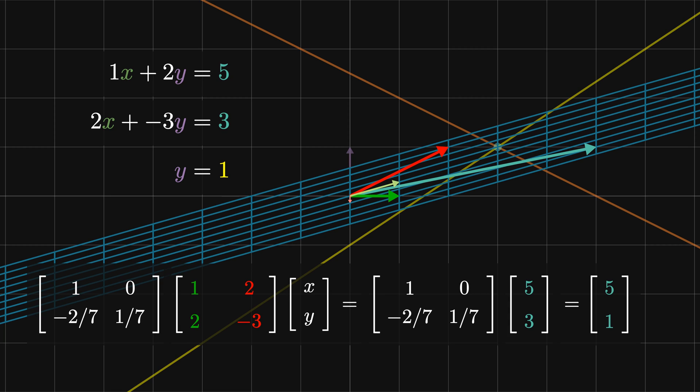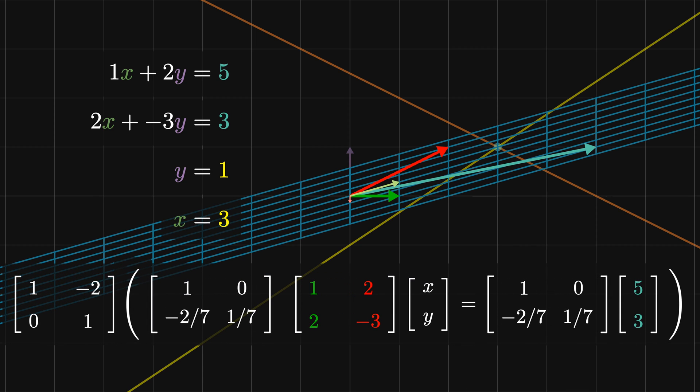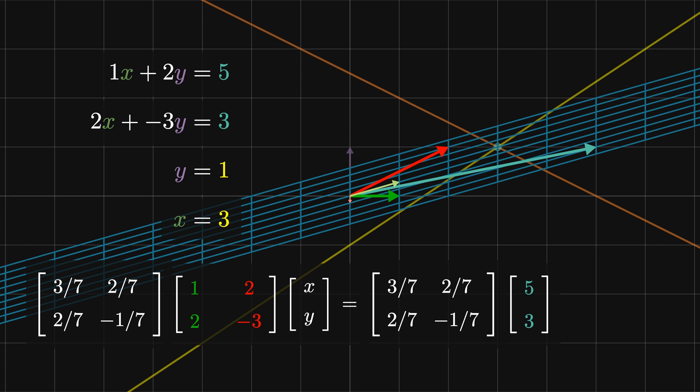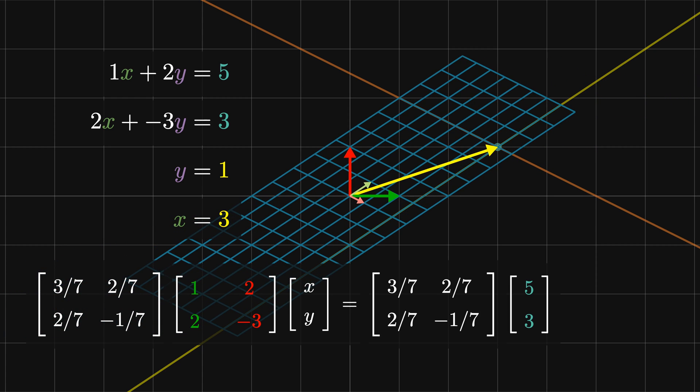The third step is now eliminating y from the first equation by multiplying the y equals 1 equation by minus 2 and adding it to the first equation. This corresponds to the matrix [1, -2; 0, 1] acting on our transformation matrix [1, 0; -2/7, 1/7], and we get the final transformation matrix [3/7, 2/7; 2/7, -1/7]. This transforms the y vector to [0, 1] and the solution vector to [3, 1].